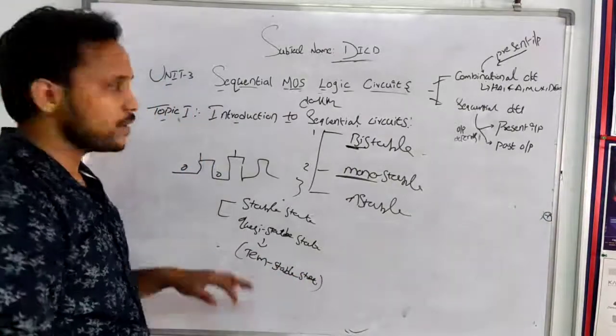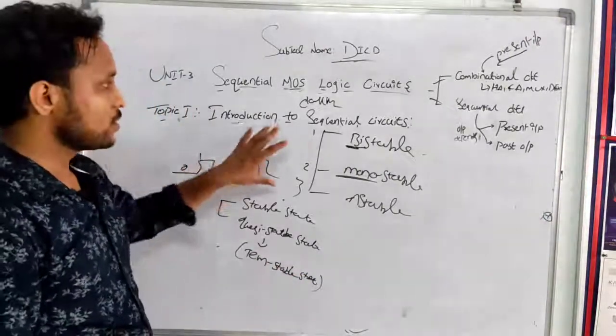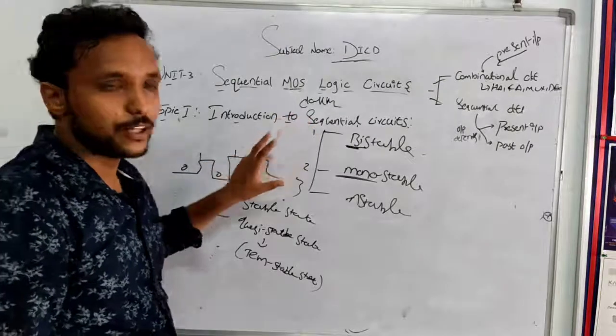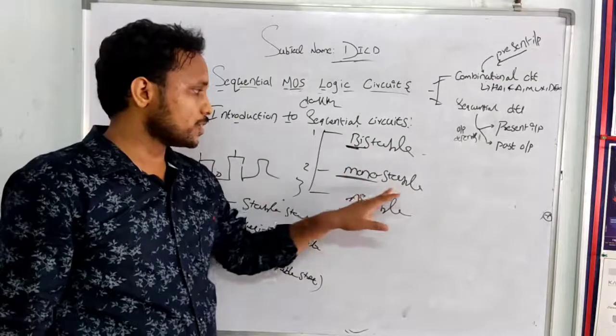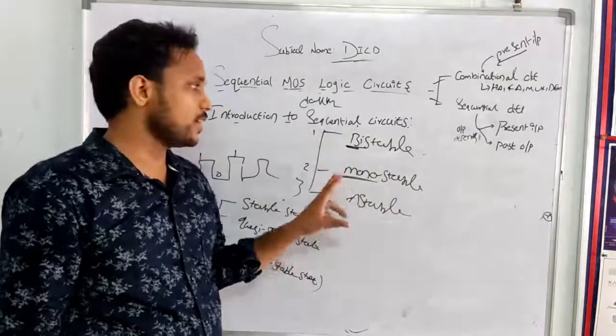So any circuit can be explained based on the states. Sequential circuits can be classified into three types: bi-stable, monostable, a-stable. The name indicates the beauty of electronics.